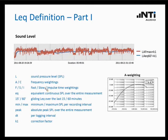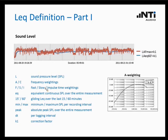Then we have an F, an S or an I behind the A or C — F, S, or I stands for fast, slow, or impulse. These are time weightings. With time weighting, we look more at the sound events that have just occurred, a few milliseconds or seconds before. Events that happened longer ago are less relevant for the measurement result, while the events that just occurred during the measurement are weighted with the highest amount.